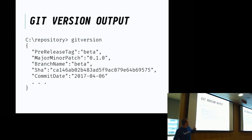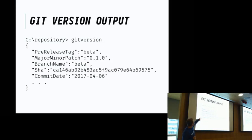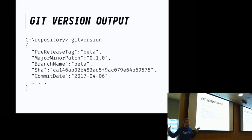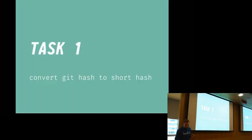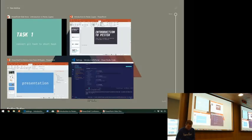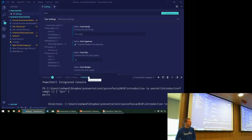The GitVersion output is formatted as JSON, with properties like pre-release tag, the full SHA of the commit, and a commit date. We're transforming those into different output paths. Task number one — extremely simple: convert a git hash to a short hash. So we'll switch to code.